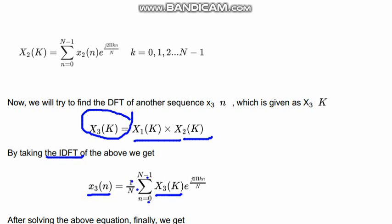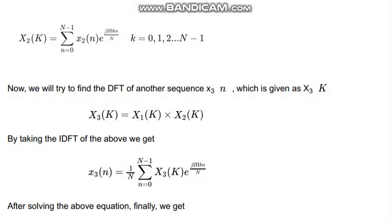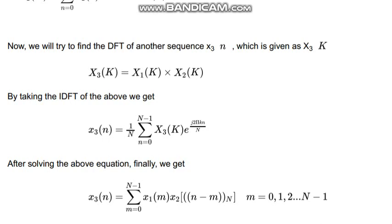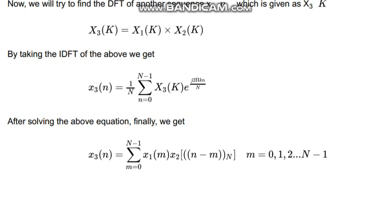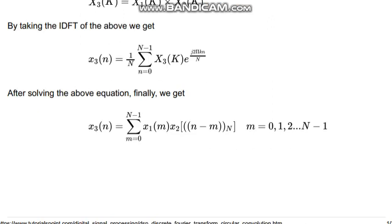That will be transformed like that but here we will use minus because that is inverse on that sequence. After solving the equation we get x3(n) = summation m=0 to n-1 x1(m) x2(n-m), and m=0 to n-1. So after solving we get this.